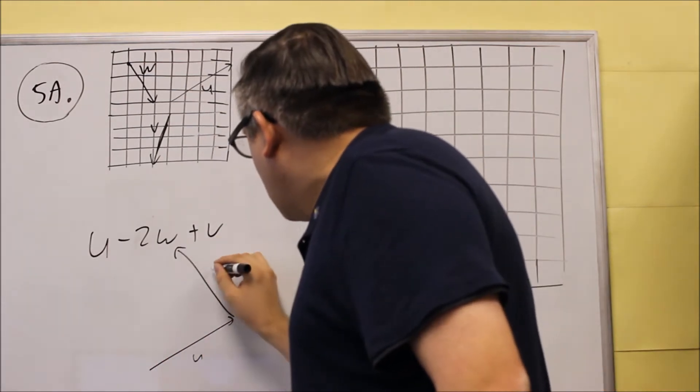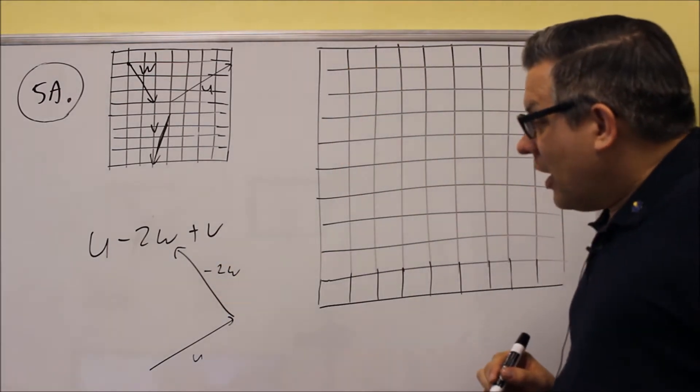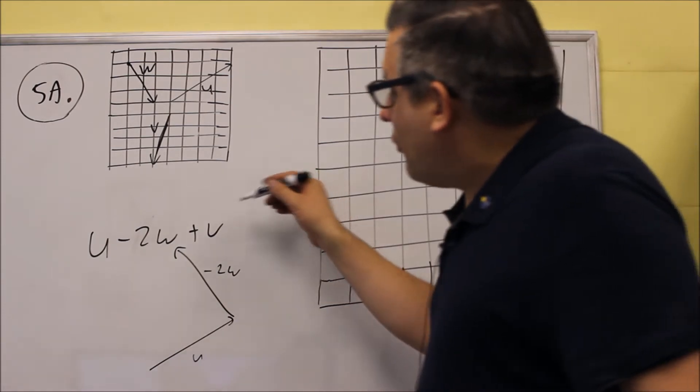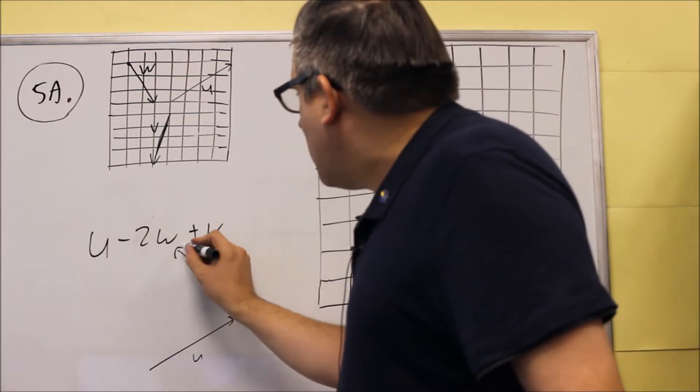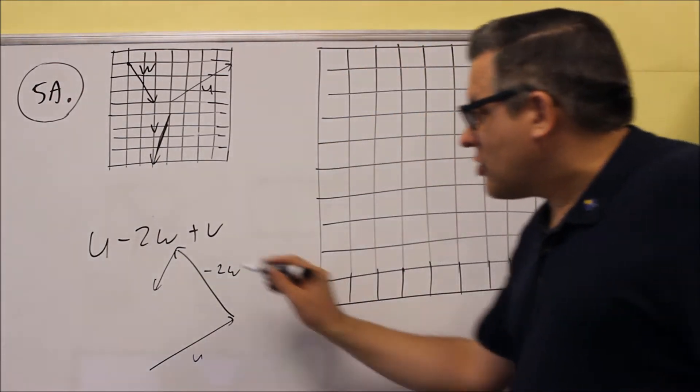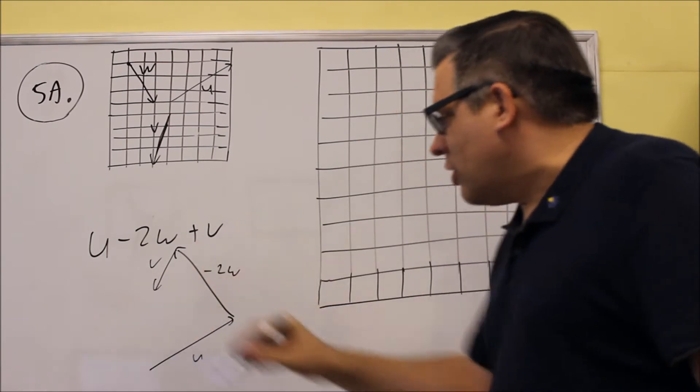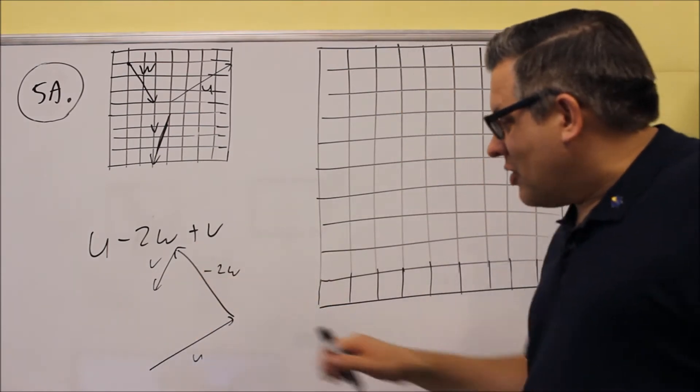So if we do this with a U, then we're going to go that way, and this will be a negative 2W, and then from there we have plus V, which means the V is actually going to go down like that. So if we decide to do it in order the way it is, this is kind of what it looks like when we draw that.